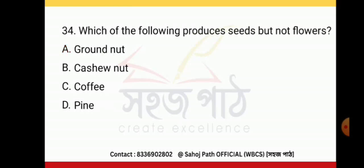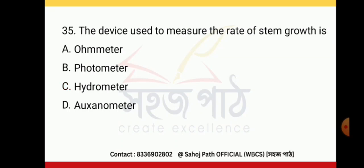Which of the following produces seeds but not flowers? Gymnosperms. The device used to measure the rate of stem growth is the auxanometer.